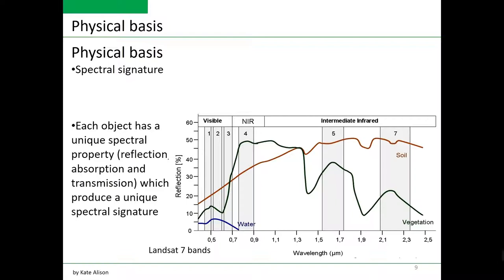Spectral signatures are the basis for any land use and land cover classification, so it's important that you understand this concept. Let's have a look at this example. Here we can see a graph where on the x-axis we have wavelength and on the y-axis we have reflectance in percentage. Location of Landsat bands are shaded in gray. Spectral signature of water is shown in blue color. Spectral signature of vegetation is in green.